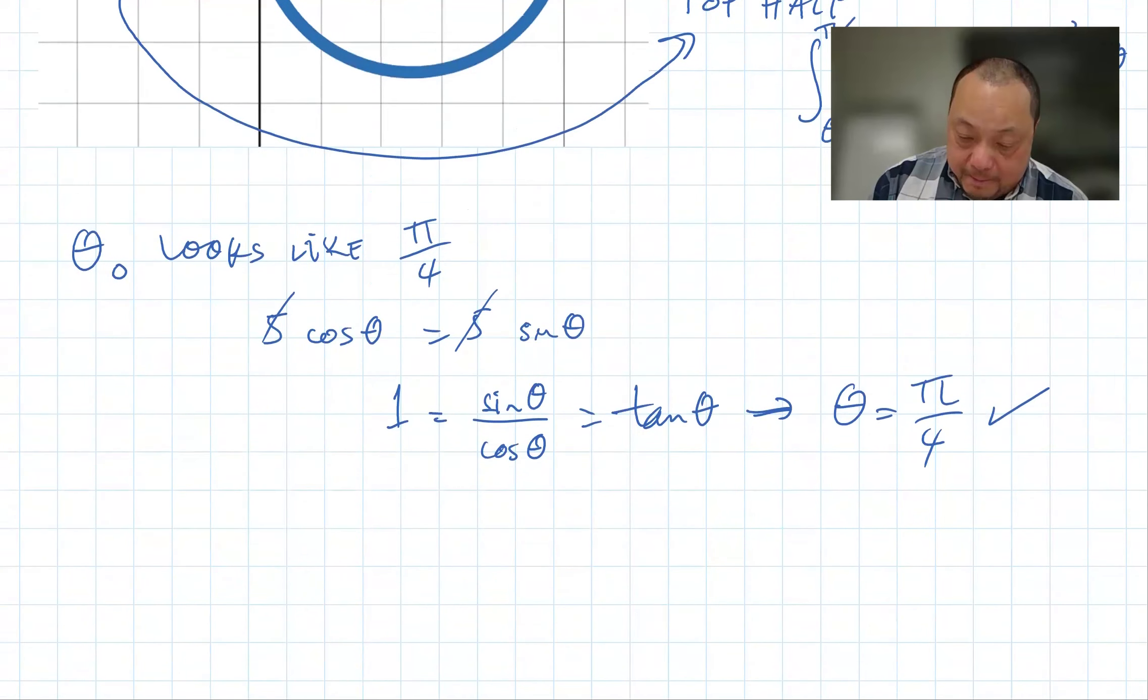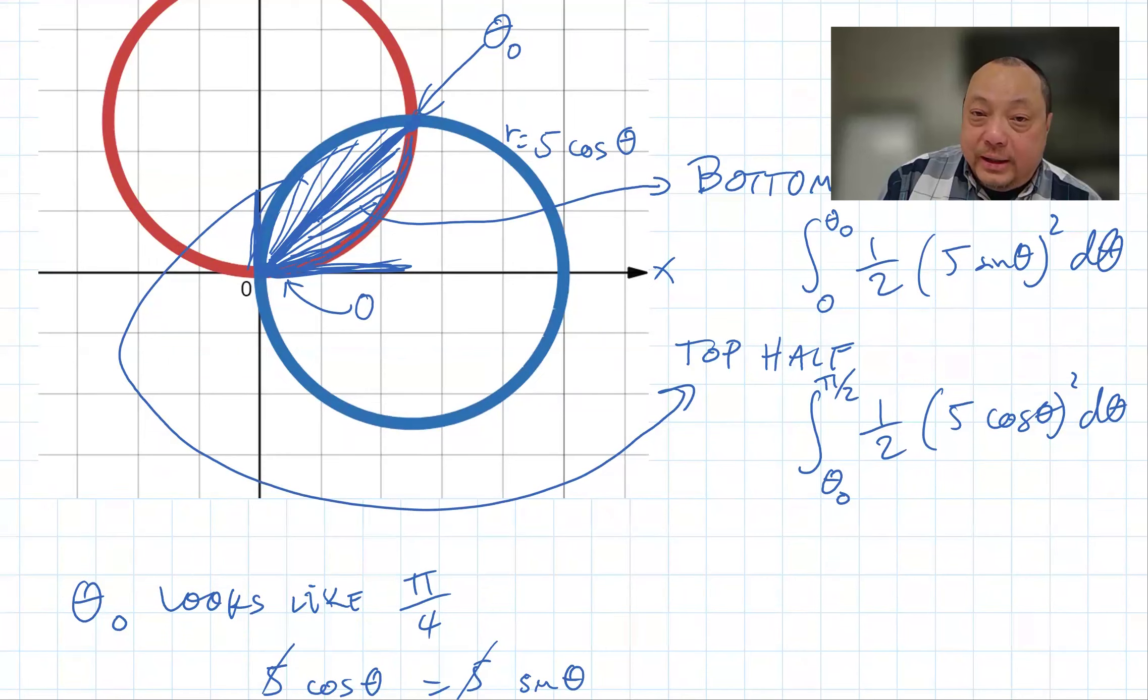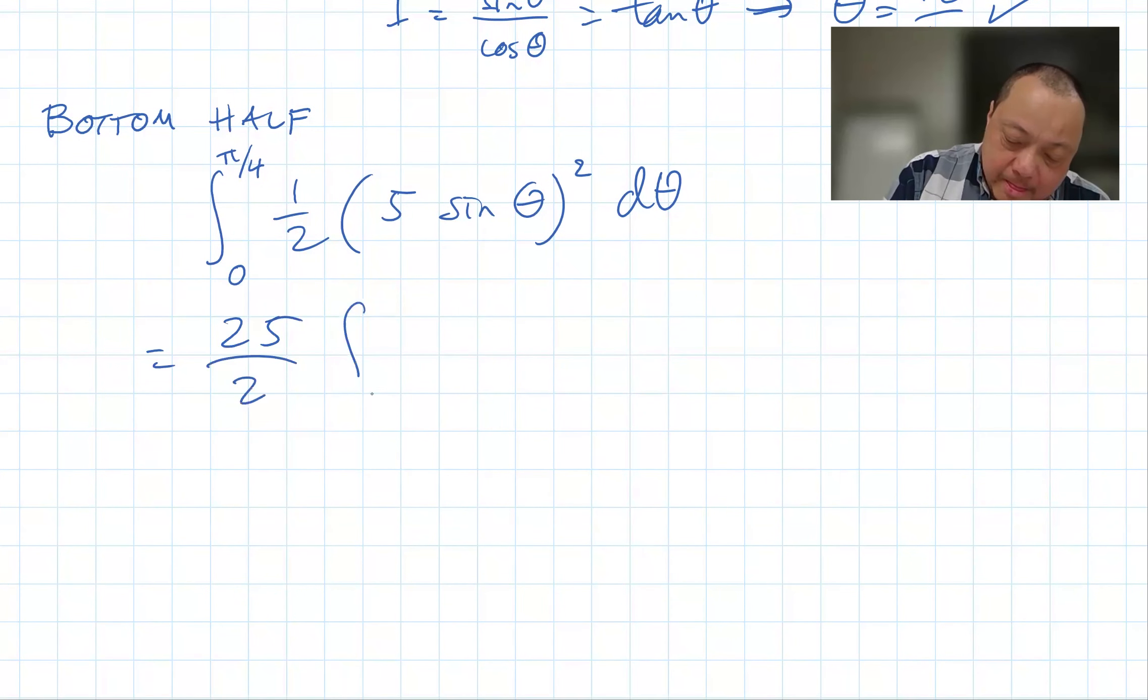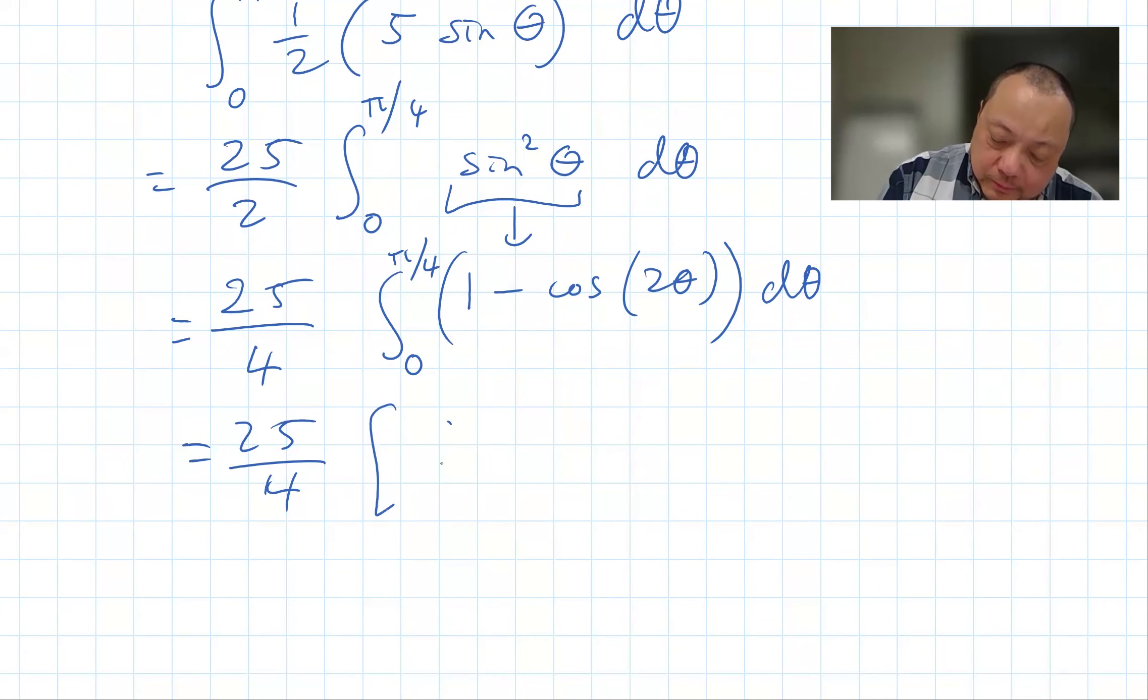So let me do the bottom half. The bottom half is integral from zero to pi over four of one half r squared d theta. And for the bottom half, the r is the red curve, that makes it sine theta. To integrate sine squared, I use the double angle formula. This is equal to 1 minus cosine 2 theta over 2. I'm actually going to take the one half outside, and it changes my fraction from 25 over 2 into 25 over 4. And I integrate from zero to pi over four.